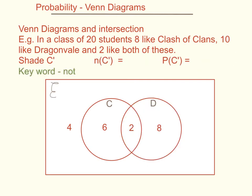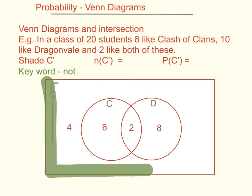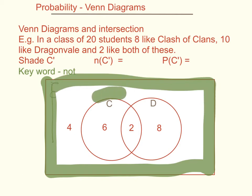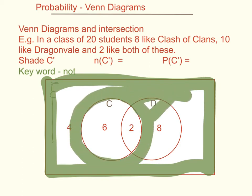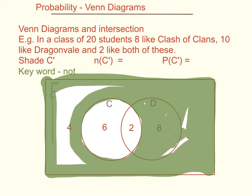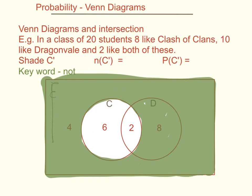In this next question, we look at the things that are not in C. Shading everything not in C means colouring all the regions outside circle C. The number not in C is 8 plus 4, giving 12. Therefore the probability of getting something not in C is 12 over 20, which equals 0.6.